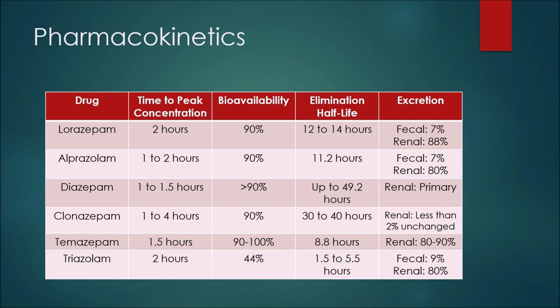For temazepam, the time to peak concentration would be 1.5 hours. Bioavailability would be somewhere between 90 and 100 percent, and the elimination half-life would be 8.8 hours. This medication is primarily excreted renally, with 80 to 90 percent here.